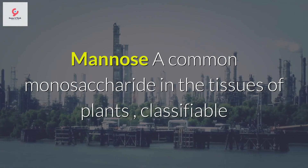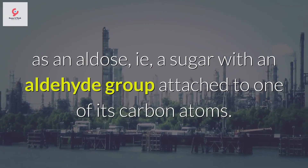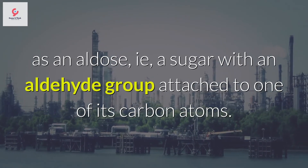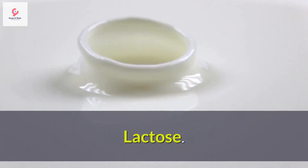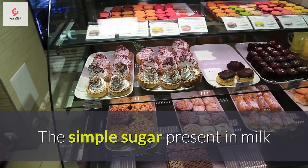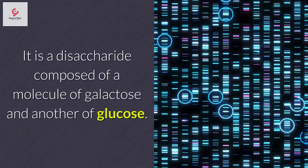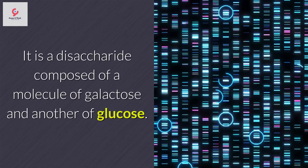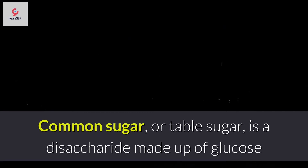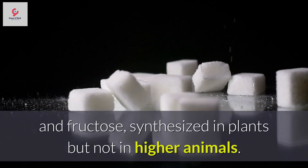Mannose is a common monosaccharide in the tissues of plants, classifiable as an aldose — a sugar with an aldehyde group attached to one of its carbon atoms. It presents enormous energy efficiency. Lactose is the simple sugar present in milk, giving it both its sweetness and its energy value. It is a disaccharide composed of a molecule of galactose and another of glucose. Saccharose, or common table sugar, is a disaccharide made up of glucose and fructose, synthesized in plants but not in higher animals.